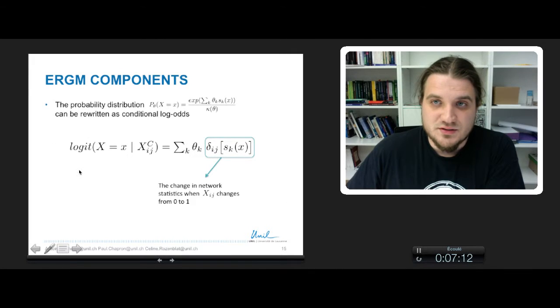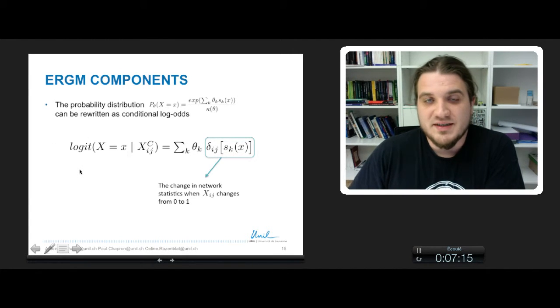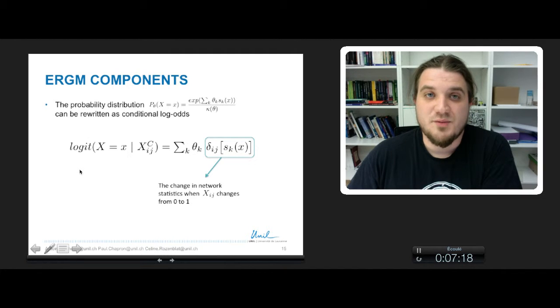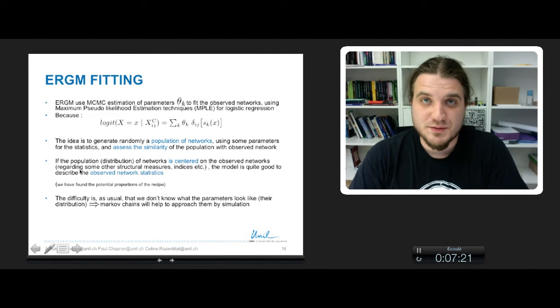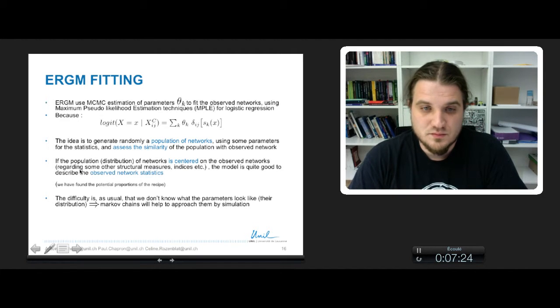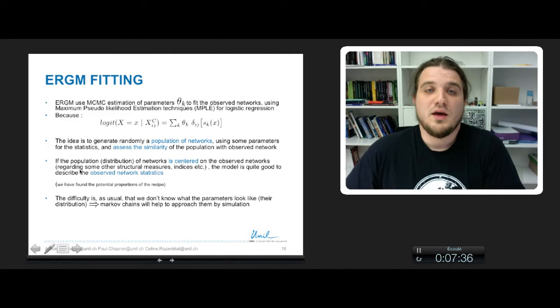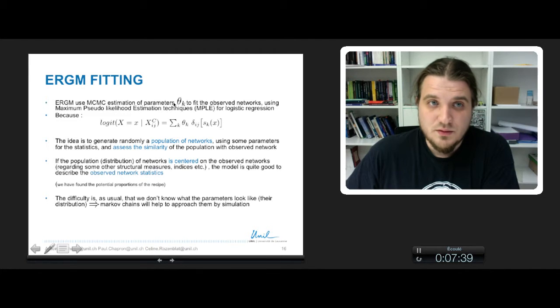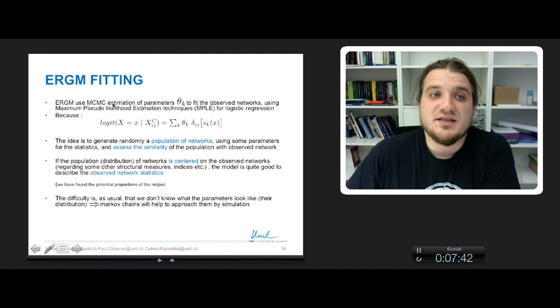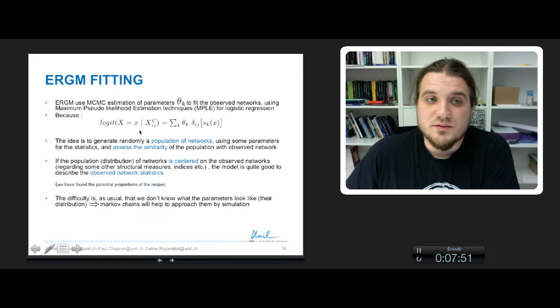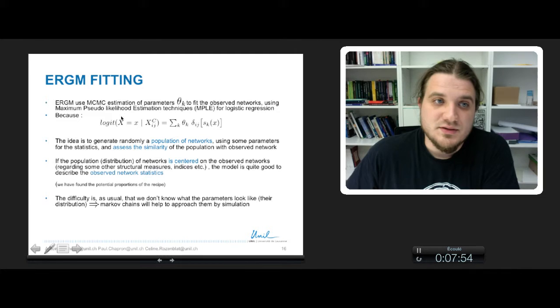And this expression is very more easy to fit with simulation. If you remember the previous course on network evolution process modeling, you remember that we use Monte Carlo Markov chain techniques to approach a distribution. Here, in ERGM, we will use MCMC estimation to find what are the parameters theta k required to fit the observed network.